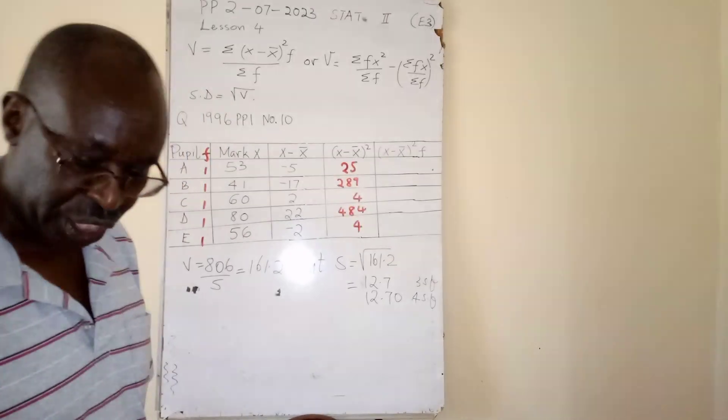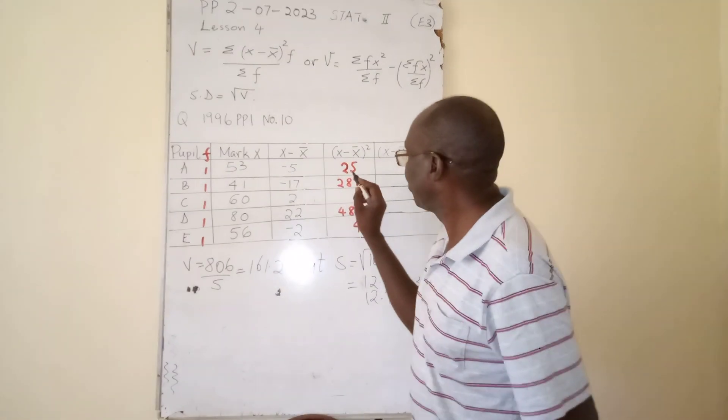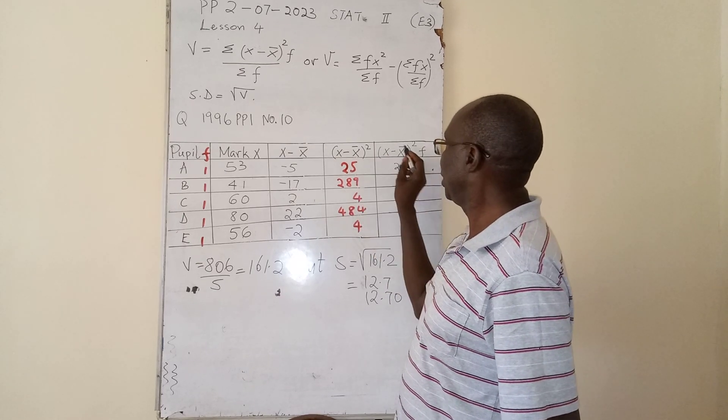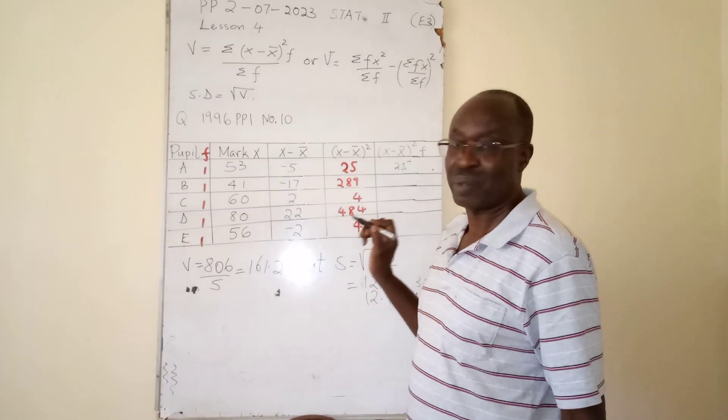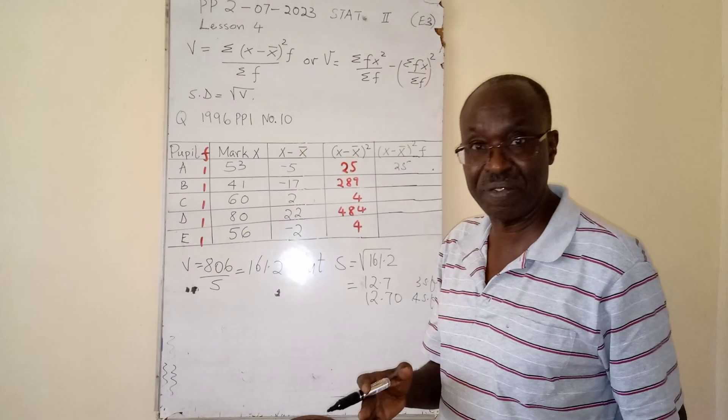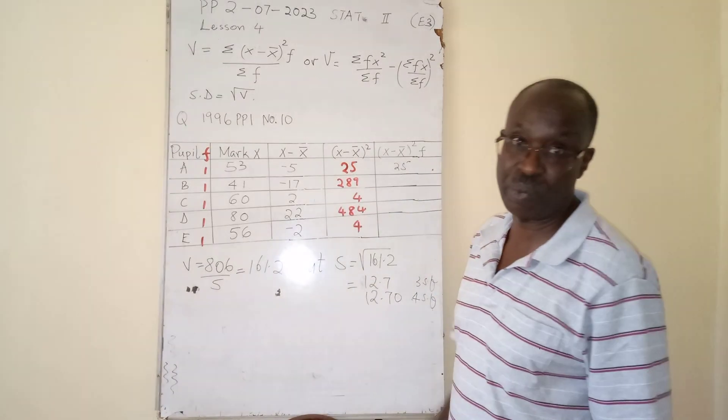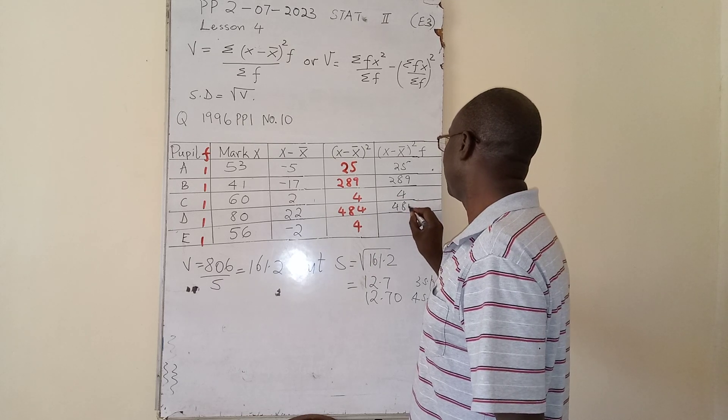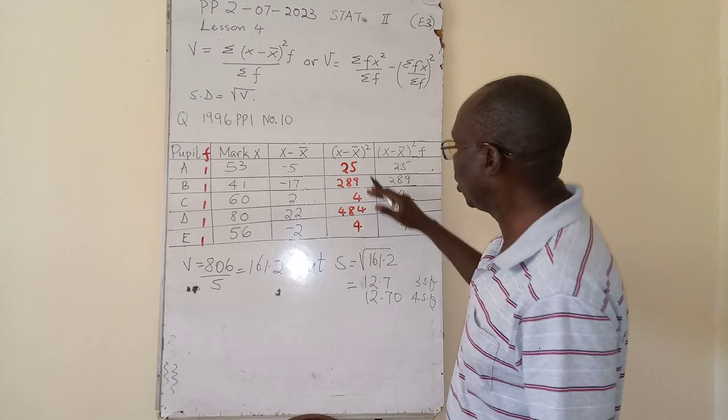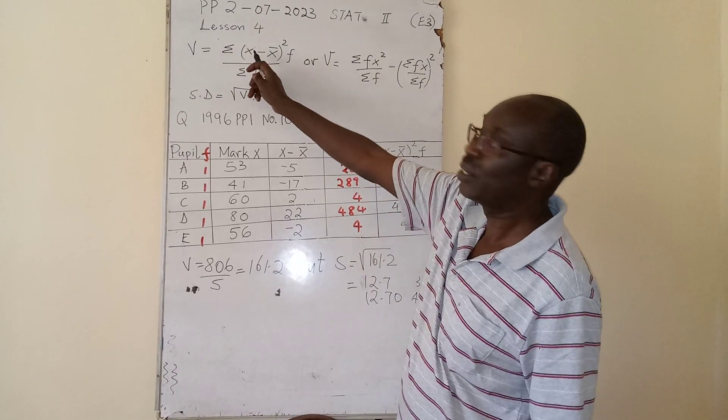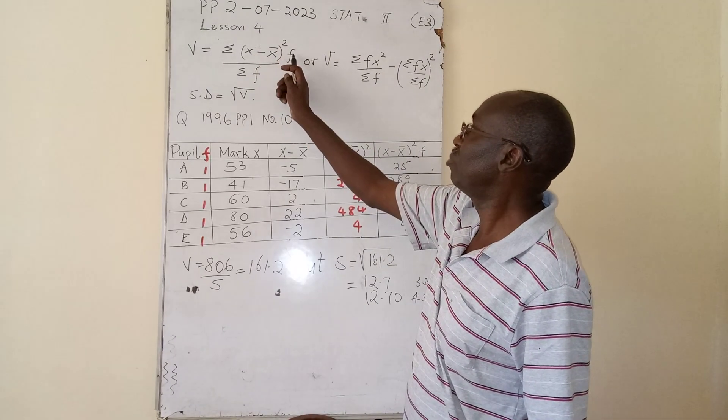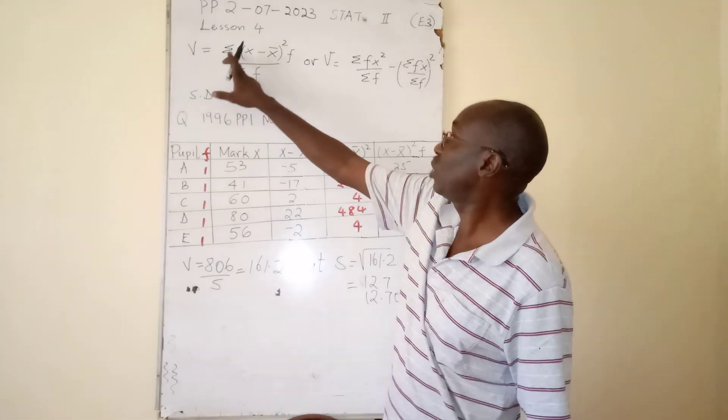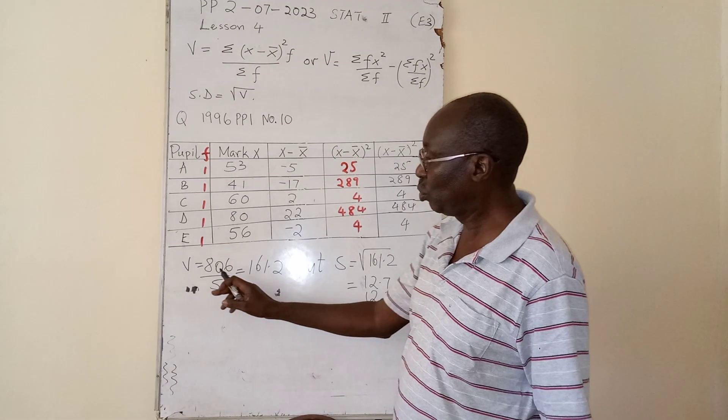It will not change. If I multiplied 25 times 1, I'll still get 25. This part multiplied by frequency - if the frequencies were different, then this final part would be also different. For now it will be 289, 4, 484, you can check. So after getting all this, we have multiplied by f which happened to be 1 in each case. We have to get the total, sigma, the total of all this.